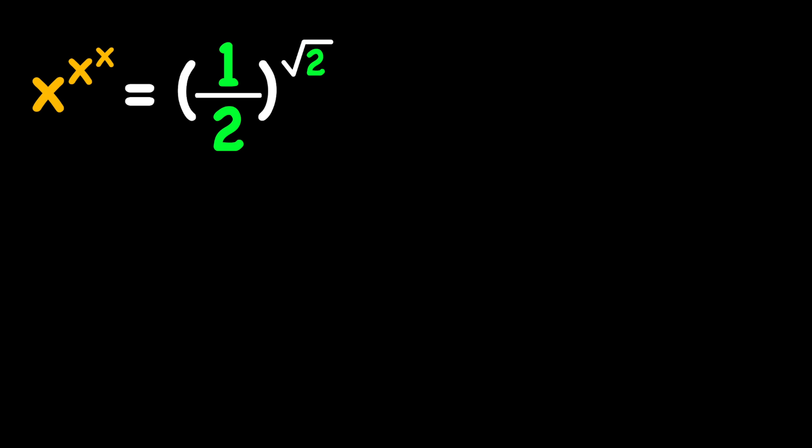So the interesting thing about this equation is that we need to ignore the left-hand side and just stick to the right-hand side. We need to focus on the right-hand side to solve this equation. The right-hand side is one half to the power of square root of two, and we need to manipulate this in order to solve our equation.